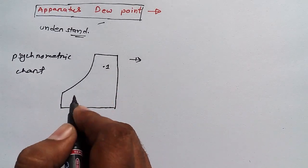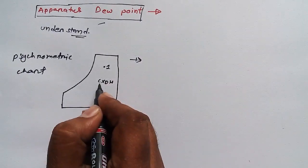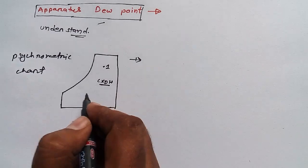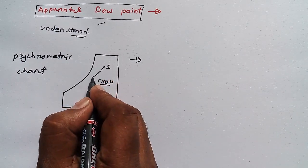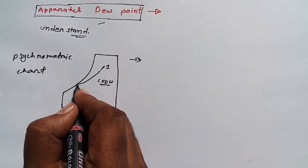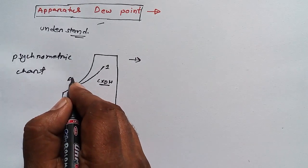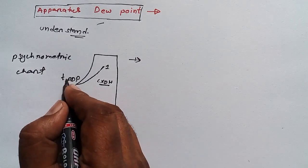Then if I do like this, then this line would be like this. This point is known as apparatus dew point.